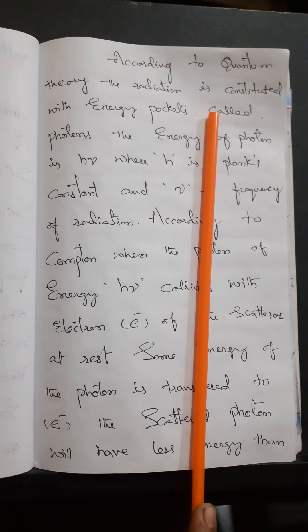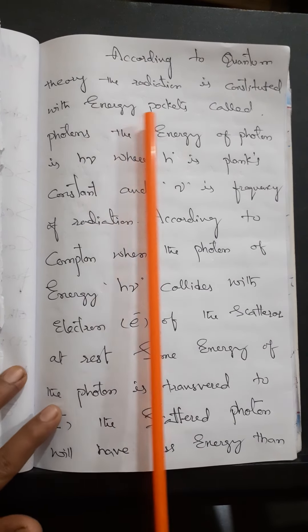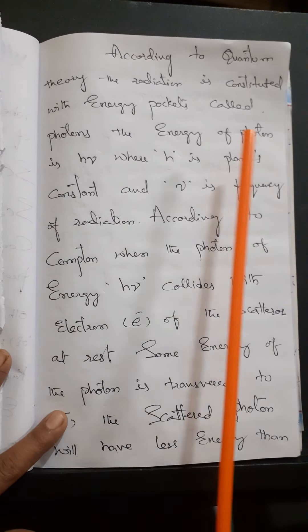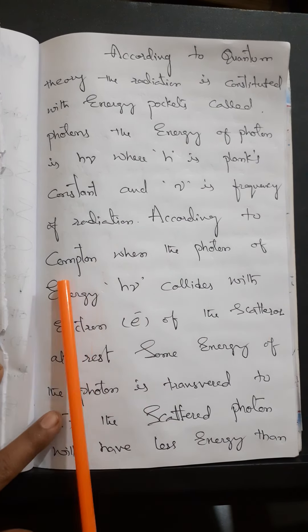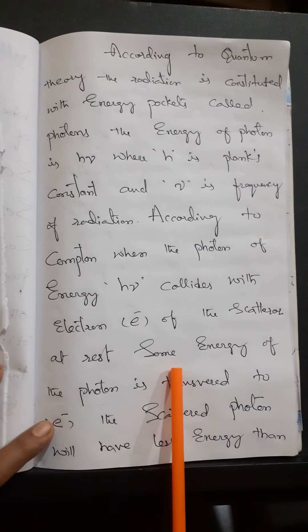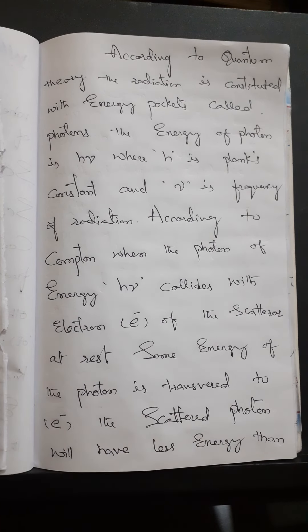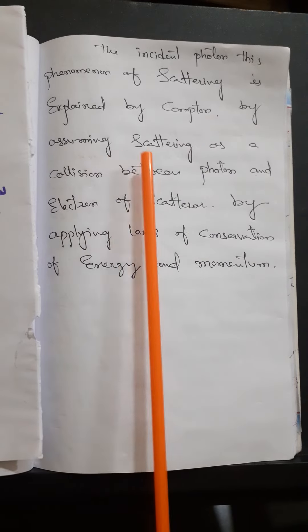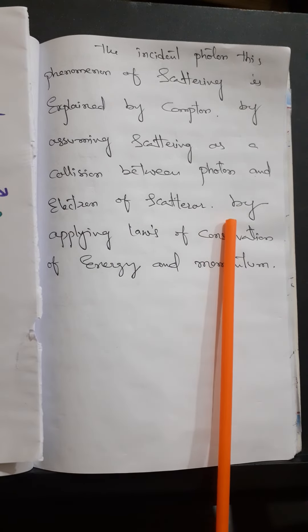According to the quantum theory of radiation, energy consists of energy packets called photons, and the energy of the photon is h·nu, where h is Planck's constant and nu is the frequency of radiation. According to Compton, when a photon of energy h·nu collides with an electron of a scatterer which is at rest, some energy of the photon is transferred to the electron, and the scattered photon will have less energy. This scattering is explained by assuming it as a collision between the photon and the electron, applying the law of conservation of energy and momentum.